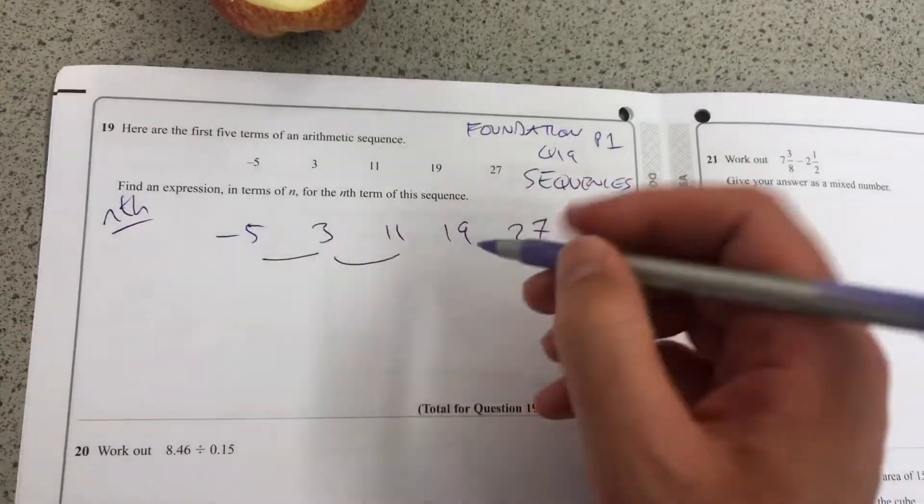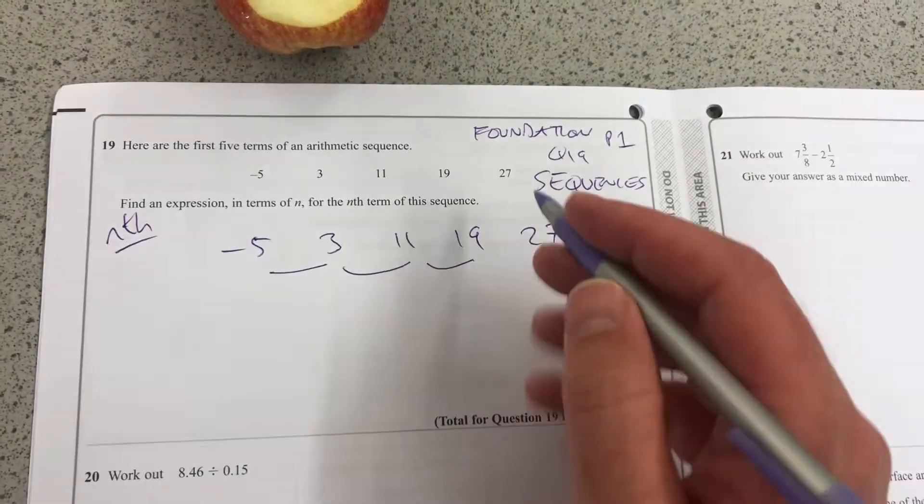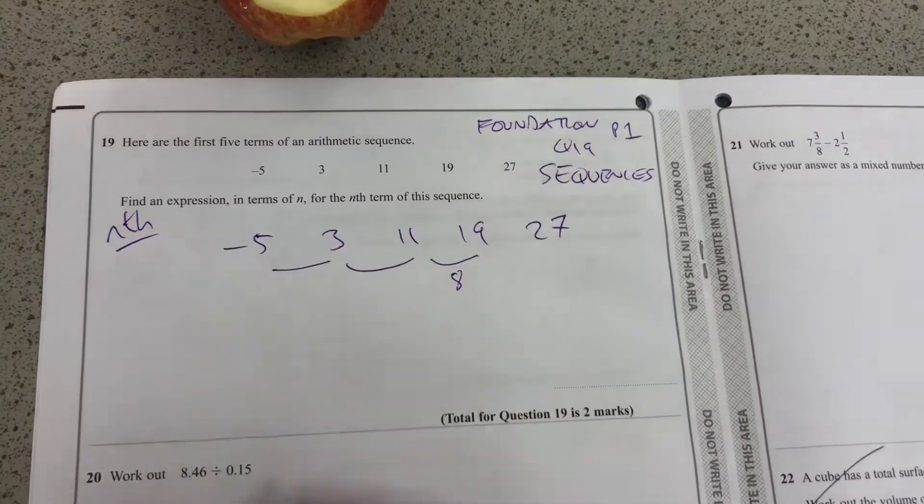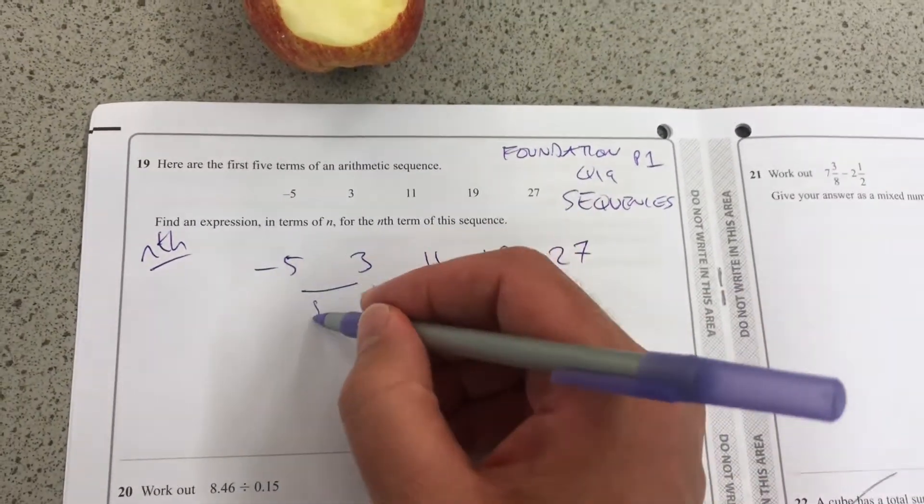Firstly, look at what's going up, what I call the gap. 11 to 19 is 8. I could have worked out from there, but I prefer dealing with positive numbers. 3 to 11 is 8. That's always going up by 8.